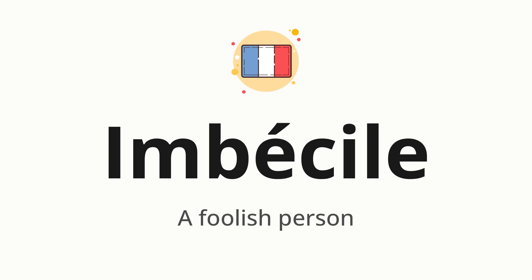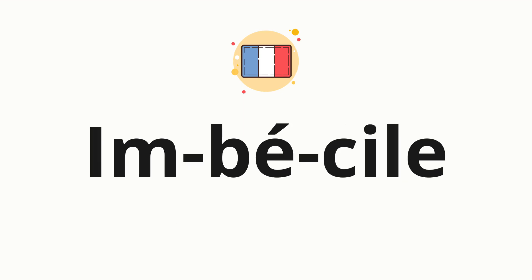Let's say it all together. Imbécile. One more time. Imbécile. Now, let's split the word into syllables, and then pronounce each syllable one by one. Im. Bécile.